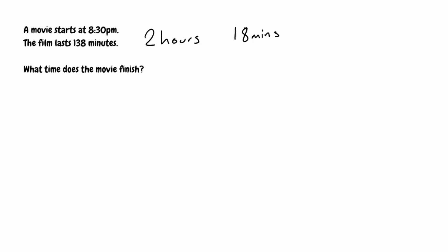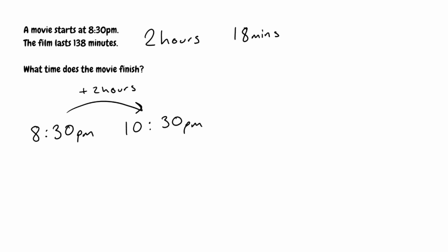Now to figure out what time the movie finishes, we're simply going to add this on. The movie starts at 8:30pm, so first I'm going to add on the hours. Adding those 2 hours takes us to 10:30pm. Now we add on the remaining 18 minutes — 18 onto 30 gives us 48 — so the time would be 10:48pm. The movie would finish at 10:48pm.